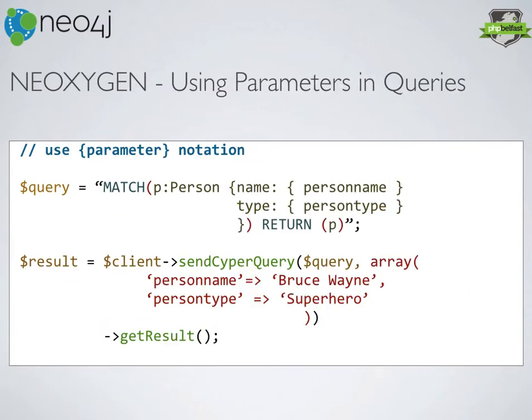We can also use parameter notation — we obviously don't want to build up our queries using string concatenation. We use curly bracket syntax to define our placeholders, and when sending the Cypher query we pass a second parameter that's an array of those placeholder names and their values. That way we're taking care of string concatenation and character escaping.